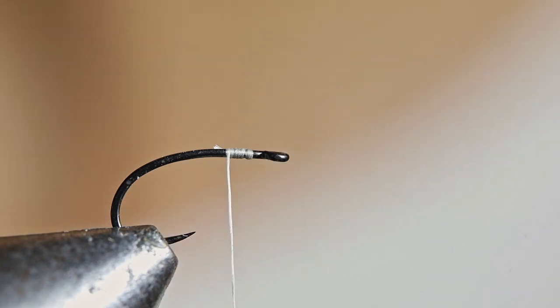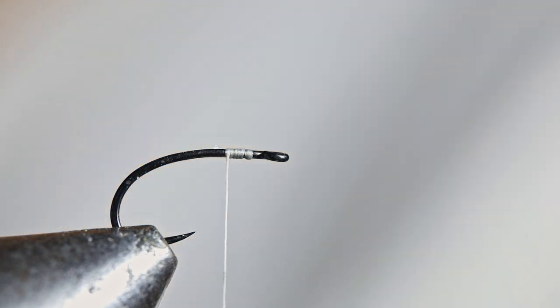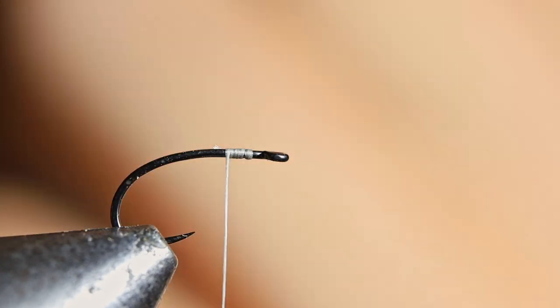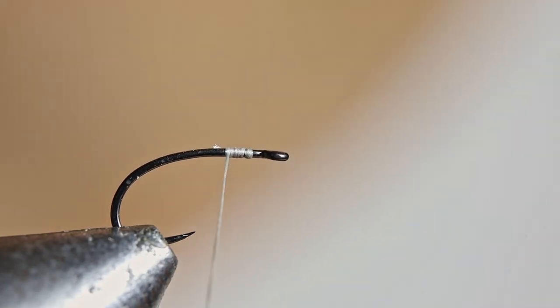So anyway, start your thread. I'm going to use a biot body today, and it's going to be tan goose biot. So once you've just started your thread like that, cut off a single biot. And put it in your mouth, while you wrap the thread down.